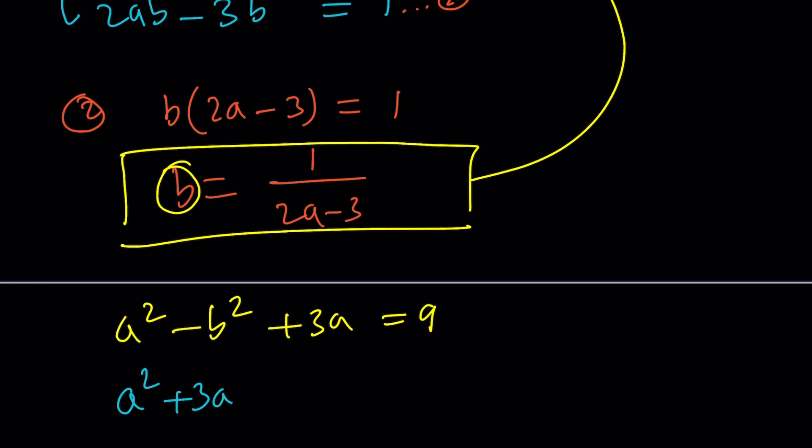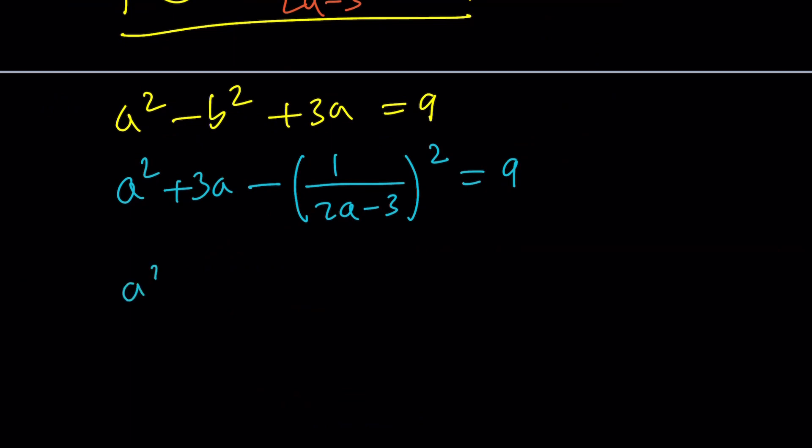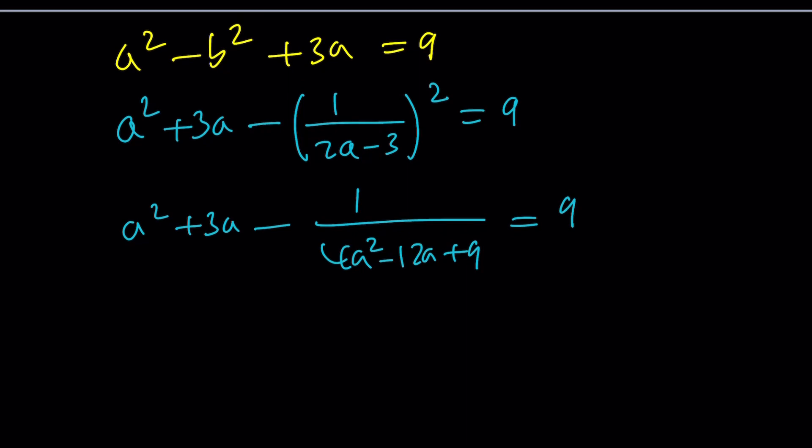I'm going to put the A squared plus 3 A together and write it as minus 1 over 2 A minus 3 which is B squared equals 9. If you square this you're going to get 4 A squared minus 12 A plus 9 equals 9. Let's multiply both sides by the denominator. So we're going to get A squared plus 3 A multiply by 4 A squared minus 12 A plus 9 equals 9 times the denominator.